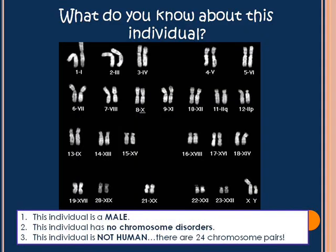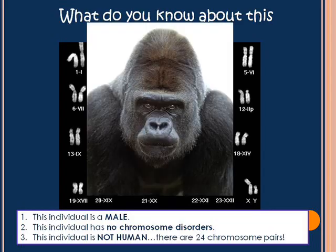This karyotype shows a male with no chromosome disorders, but this male is not human — there are actually 24 chromosome pairs here. It's not even close to human. We've got a gorilla.